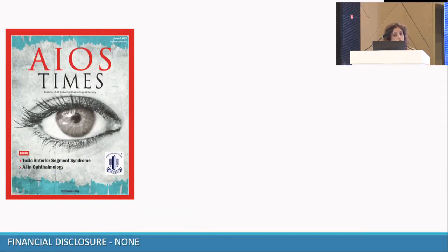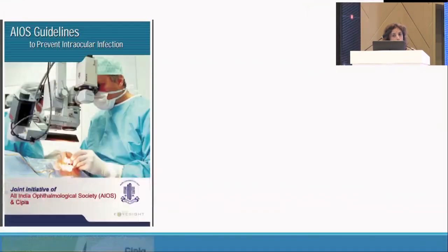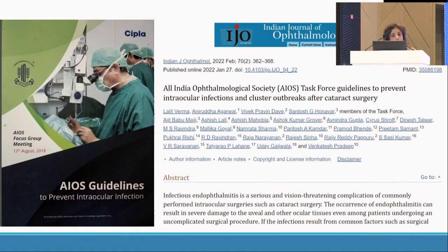Just as Dr. Arora was speaking about the recent outbreak of TAS, AIOS always keeps on giving us guidelines on whatever is recently happening. These guidelines keep on increasing, changing, or evolving as newer science and literature is published. We have to keep up to date with whatever needs to be done for prevention of intraocular infection. These are some recent guidelines — some old, some new. The latest is a very good read from IJO 2022 about a task force that has given all the guidelines on how to prevent intraocular infection and cluster outbreaks.